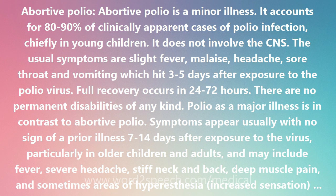Polio can thus take one of two main avenues: that of minor, abortive illness, or that of major illness. Polio as a major illness can then take one of two branching roads: that of aseptic meningitis without paralysis, or that of paralytic polio. In abortive polio, recovery is complete. Recovery is also complete in polio with only aseptic meningitis. In paralytic polio, about 50% of patients recover with no residual paralysis, about 25% are left with mild disabilities, and the remaining patients have severe permanent disability.